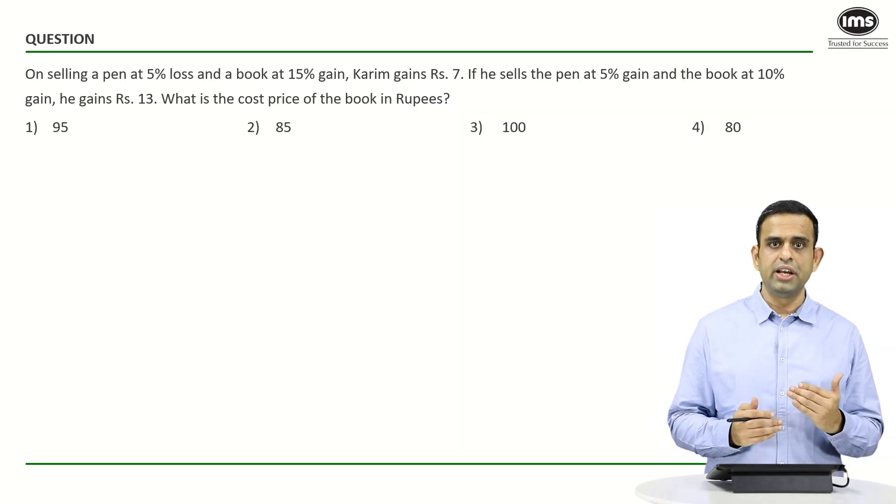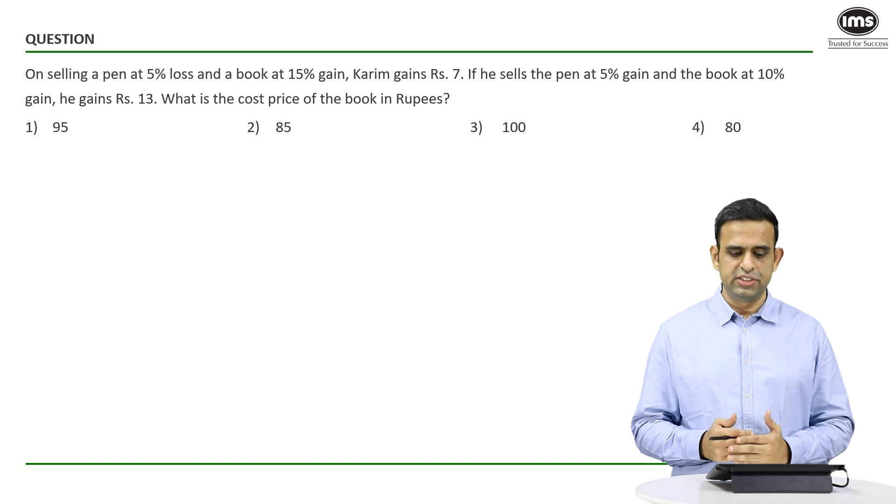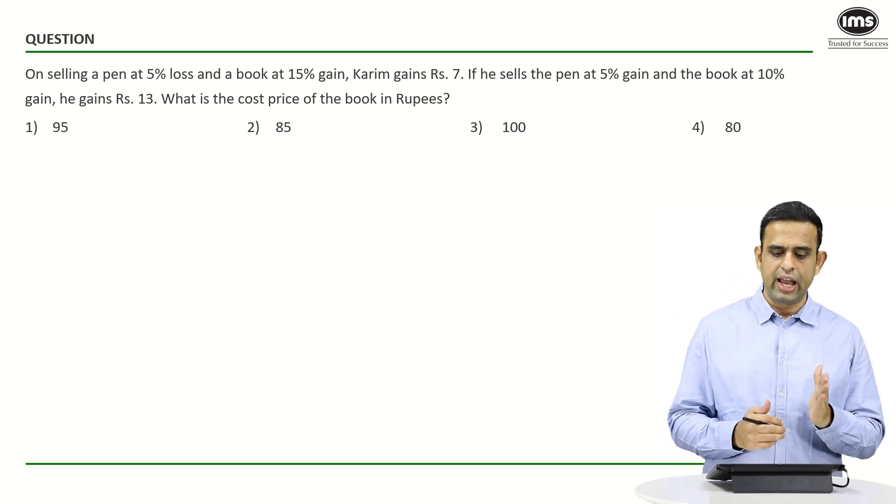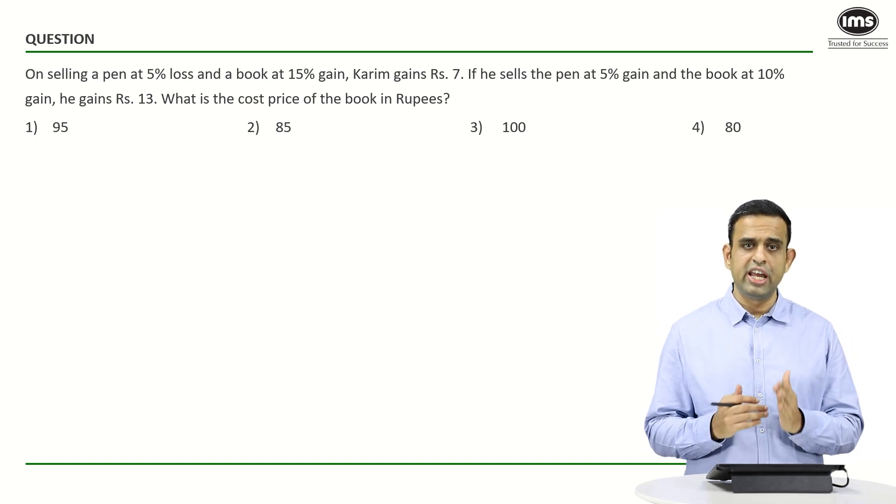In this particular question, it is given that on selling a pen at 5% loss and a book at 15% gain, Kareem gains rupee 7. If he sells the pen at 5% gain and the book at 10% gain, the gain now becomes rupee 13.